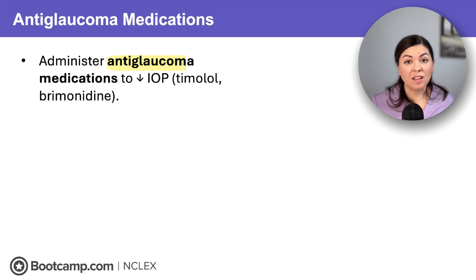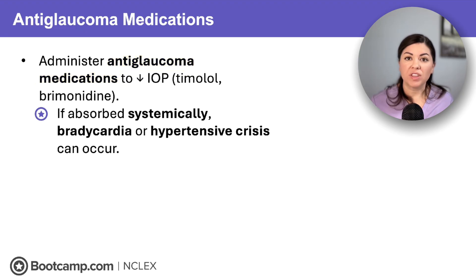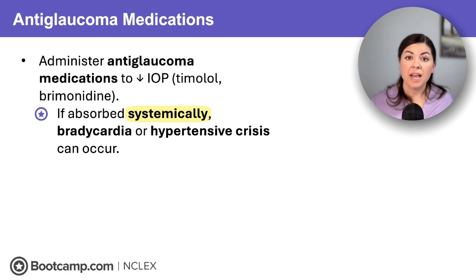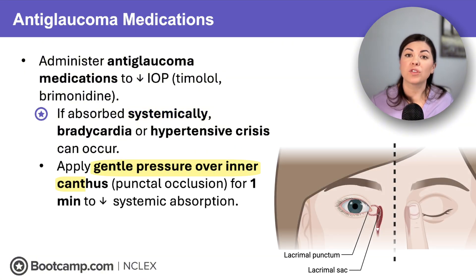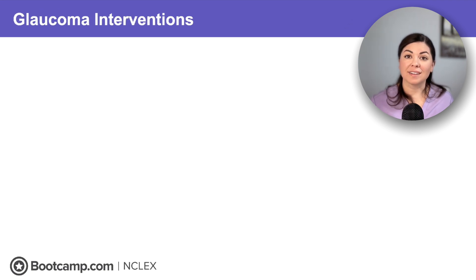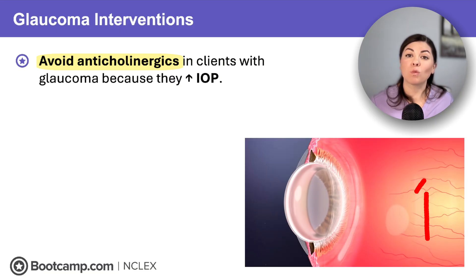So let's talk about nursing interventions for glaucoma, starting with anti-glaucoma medications. To manage IOP, we use eye drops like timolol, a beta blocker, or brimonidine, an alpha-2 adrenergic agonist. Remember, these medications can block the sympathetic nervous system and cause adverse effects if absorbed systemically — they can cause bradycardia or hypertensive crisis. So teach clients to apply gentle pressure over the inner canthus for one minute after administering drops. This is called punctal occlusion, and it helps decrease systemic absorption. Remember on NCLEX, avoid anticholinergics in clients with glaucoma because they dilate the pupil and raise IOP.